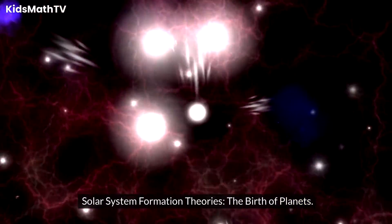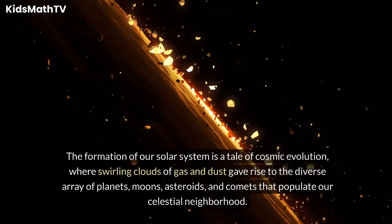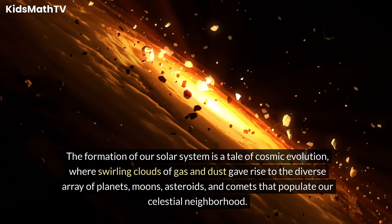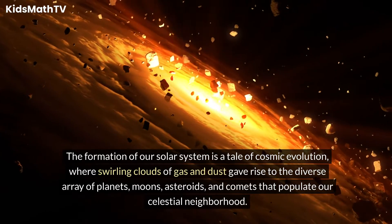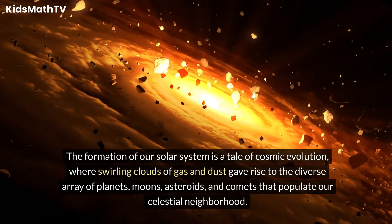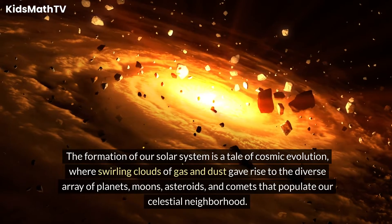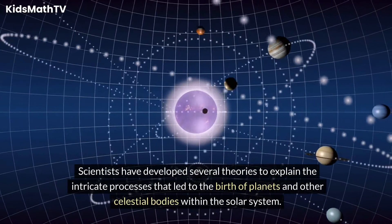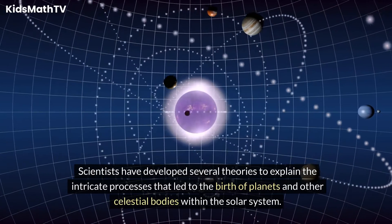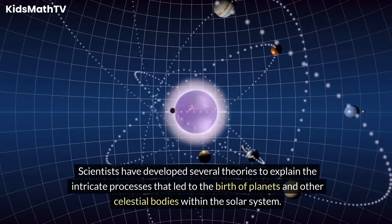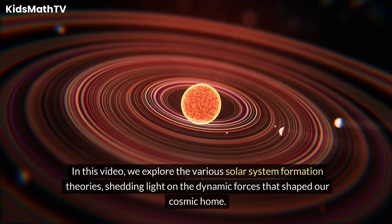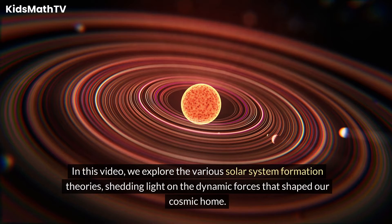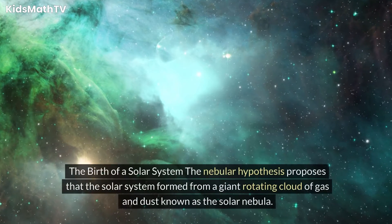The formation of our solar system is a tale of cosmic evolution, where swirling clouds of gas and dust gave rise to the diverse array of planets, moons, asteroids, and comets that populate our celestial neighborhood. Scientists have developed several theories to explain the intricate processes that led to the birth of planets and other celestial bodies within the solar system. In this video, we explore the various solar system formation theories, shedding light on the dynamic forces that shaped our cosmic home.